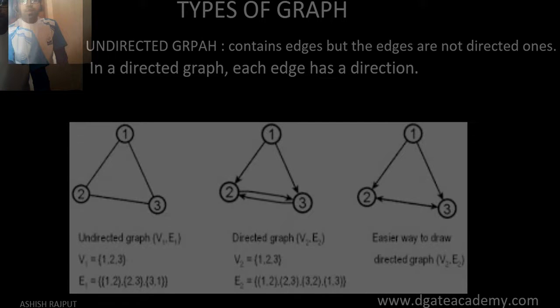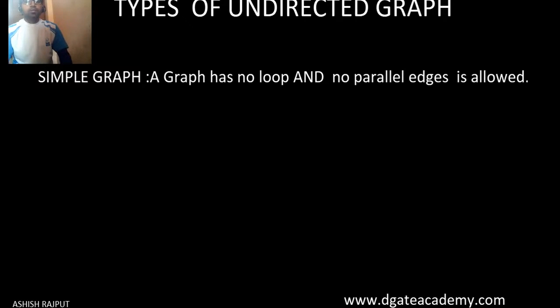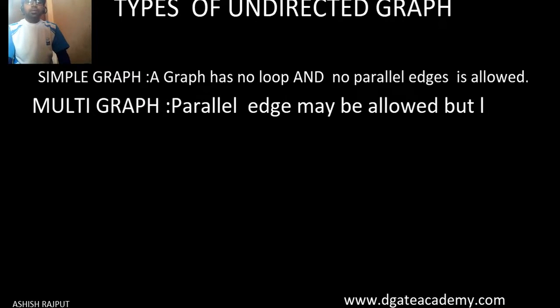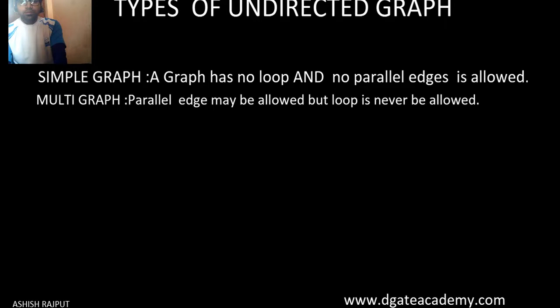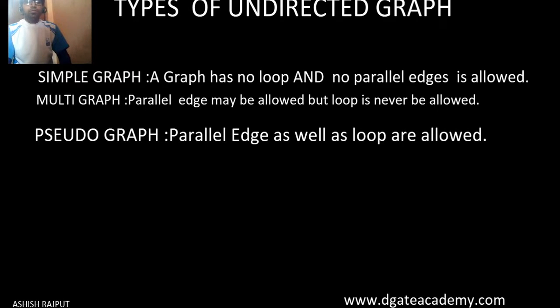Now we deal about the types of undirected graph — this is an important slide. First, the simple graph: a simple graph is one in which no loop and no parallel edges are allowed. Second, the multi-graph: parallel edges may be allowed but a loop is never allowed. Third, the pseudo graph: both parallel edges and loops may be allowed.